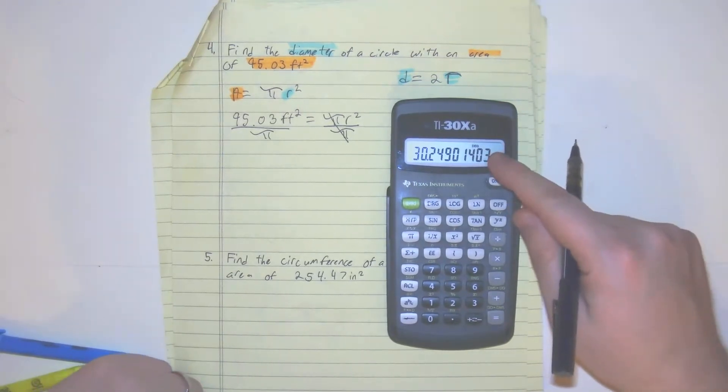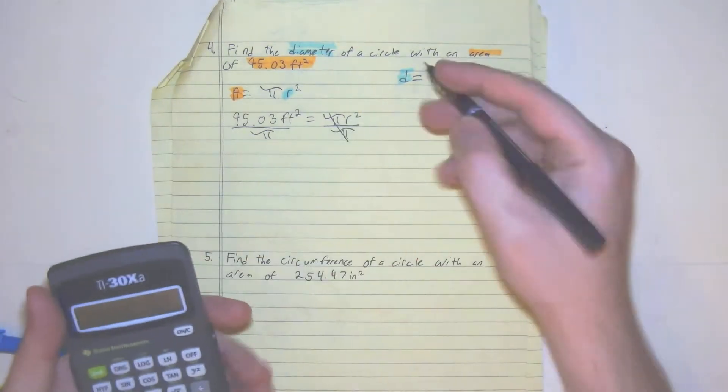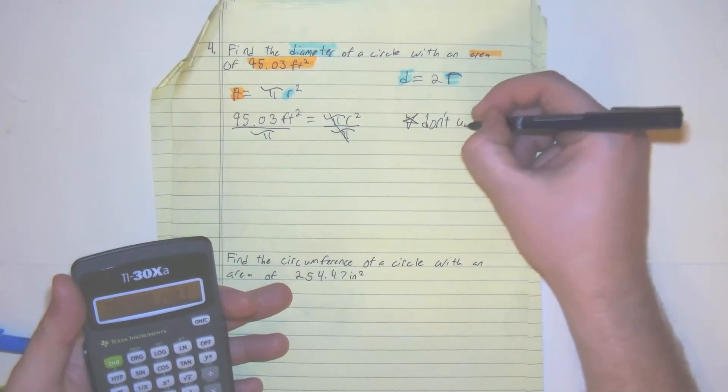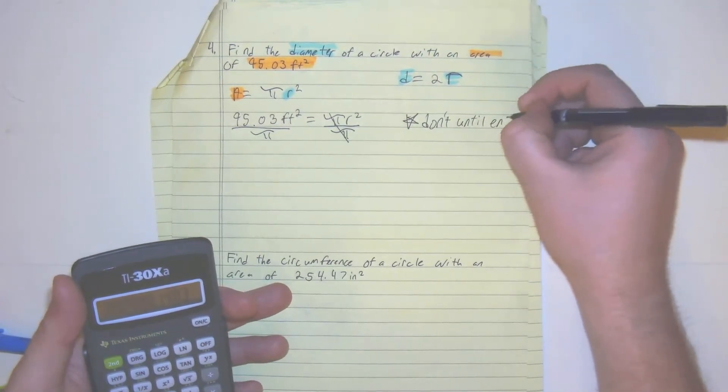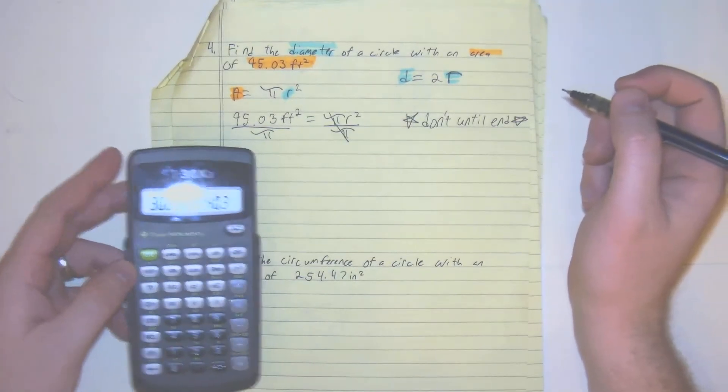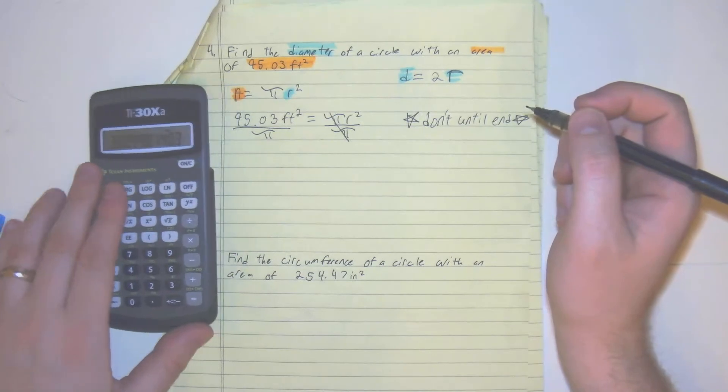So typically I want to write this in. I'll just do the next step using these numbers, but don't round to the very end. Let me just write that down. Don't round until the end. Big chemistry thing. Won't be too much of a hassle right here, but just that's where the focus will be.